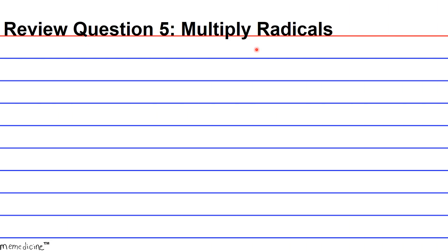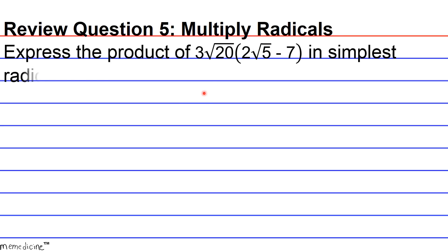Review Question 5: Multiply Radicals. Express the product of 3√20(2√5 - 7) in simplest radical form. Press pause if you need to, and I'll give you a moment to think.